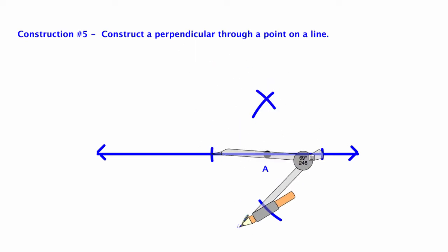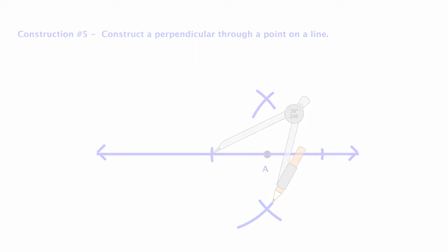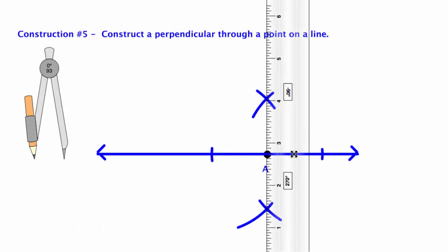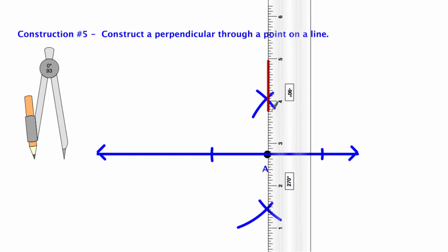And now I have one, two, three points, if you count point A, to line up my straight edge and draw a perpendicular through a point on a line.